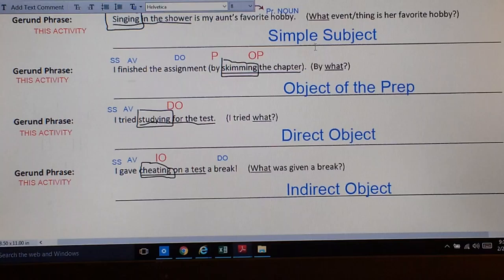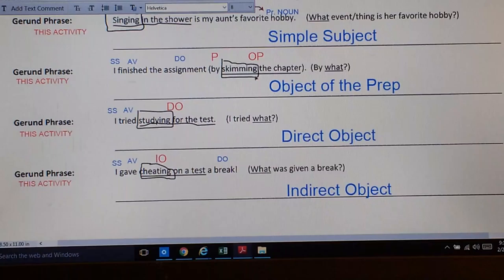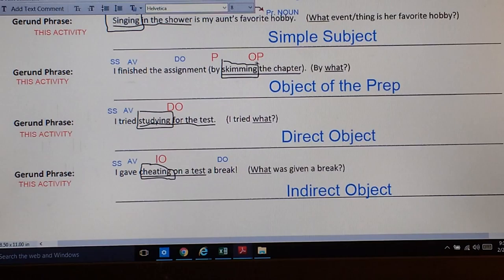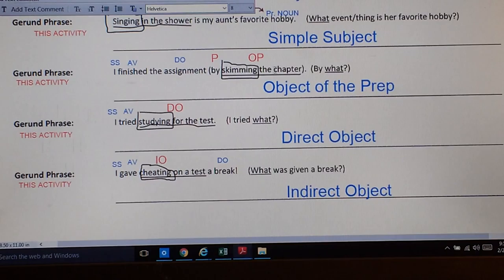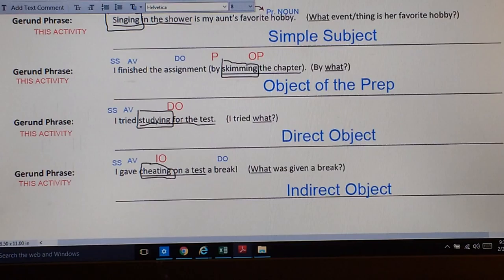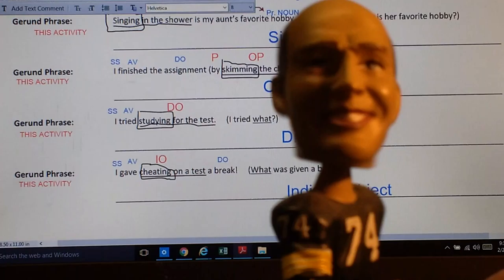Another gerund phrase. I finished the assignment. I have a prepositional phrase. Now, boys and girls, this can get confusing. But I have a prepositional phrase starting with the preposition by. So, this preposition by has an object of the preposition. I finished the assignment by this activity. What activity? Skimming the chapter. Skimming the chapter is my object of the preposition. Now, I know we said in the past that you can never have a verb form within the prepositional phrase. But this acts like a noun. And it acts specifically like the object of the preposition. I finished the assignment by doing this thing. Skimming the chapter. It's an activity. Object of the preposition. And to really make it confusing, this gerund has its own object. Chapter. But the whole thing combined is the object of the preposition. That one even makes my head shake a little bit.